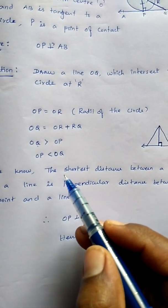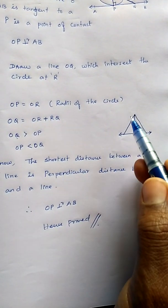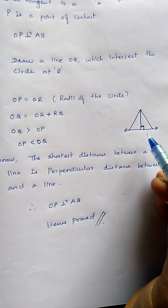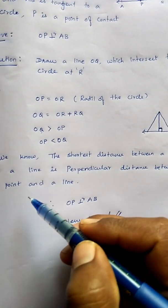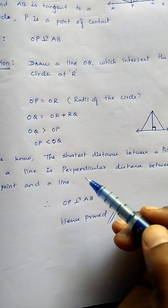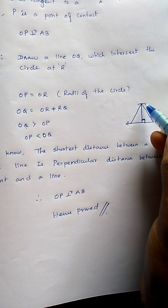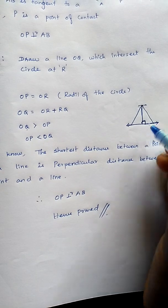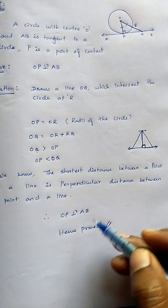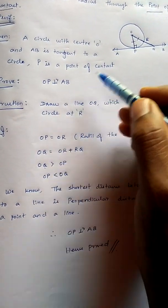The shortest distance means that will be perpendicular. So that's what we are writing here: the shortest distance between a point to a line is perpendicular distance between the point and the line. Therefore we can say the shortest distance is this only, so OP perpendicular to AB. Therefore, hence proved.